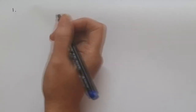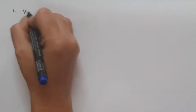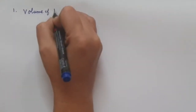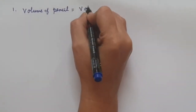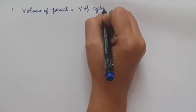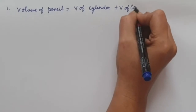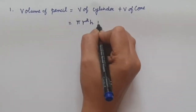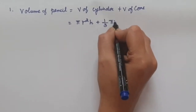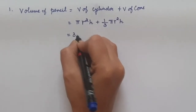In this question, we have a pencil. A pencil is made up of a cylinder and a cone. In order to find the volume of the pencil, that will be equal to the volume of the cylinder plus the volume of the cone. Volume of the cylinder is πr²h and the volume of a cone is (1/3)πr²h. Now we will substitute all our values.